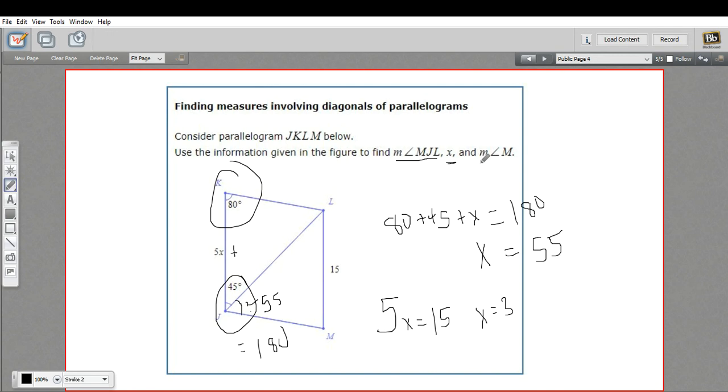And then finally, we want to find the measure of angle M. So that's this angle right here. And that's not too tough because opposite angles inside a parallelogram are congruent. So if that's 80 up at K, this is 80 down at M.